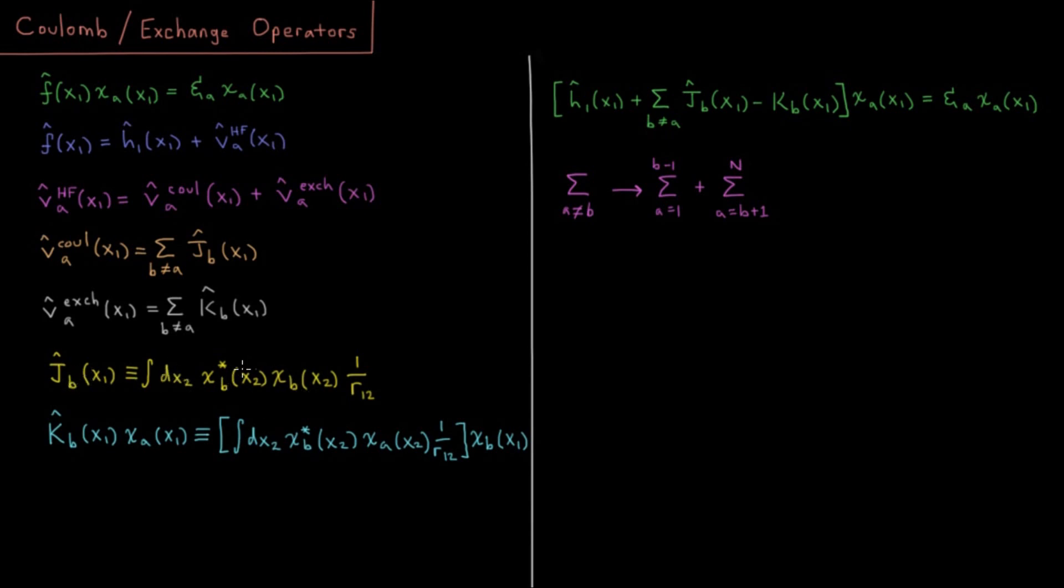So chi star B, chi B, the complex conjugate of spin orbital B times itself, giving you the charge density of an electron in spin orbital B times the one over r12 operator. So how much charge density is there at that point in space for electron two in spin orbital B, and how far is it away from the current location of coordinates x1 that electron one is at.